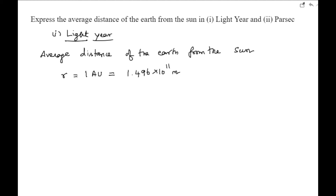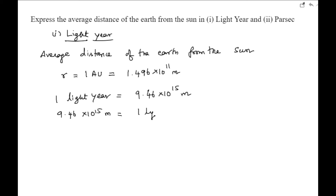We have the distance of Earth from the Sun as one astronomical unit, which in meters is 1.496 × 10¹¹ meters. Now we convert this to light years. One light year is equal to 9.466 × 10¹⁵ meters. Therefore, one meter is equal to 1 divided by 9.466 × 10¹⁵ light years.